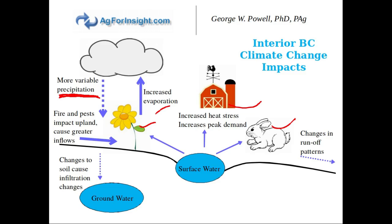Changes in the uplands above farming areas — from fire, pest outbreaks such as mountain pine beetle, or drought — have a big impact on upland vegetation and its ability to hold water. This is causing greater inflow, so larger freshet flows or other seasonal flood events. As a consequence there are also changes in runoff patterns, and partly because of climate change and management practices, changes to the soil that reduce infiltration — particularly with fire or drought, you can make the soil less amenable to water entering the soil profile, so a greater portion flows over and off.